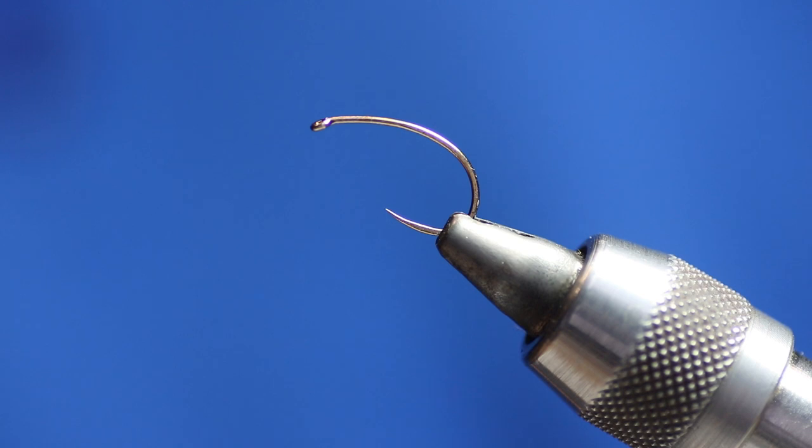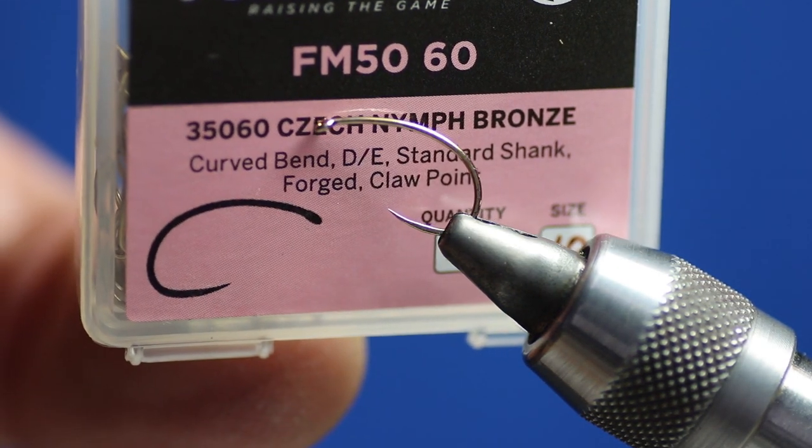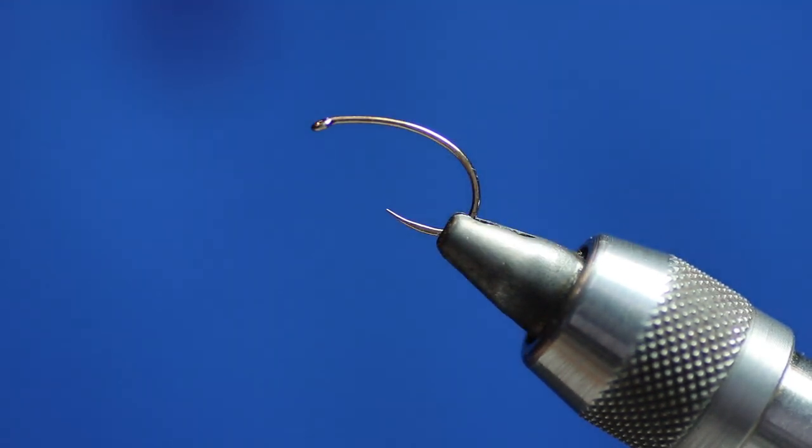So today I'm going to be tying just a standard black buzzer. It's pretty easy. Nothing fancy about it. You can tie them on straight hooks or curved hooks. I'm tying them on a Fulling Mill Czech nymph hook, which is a curved hook, a size 10.